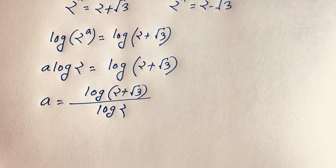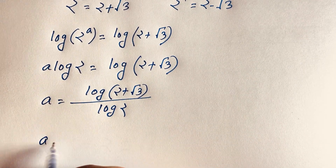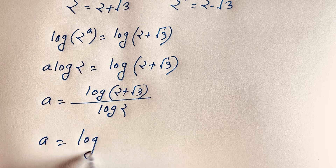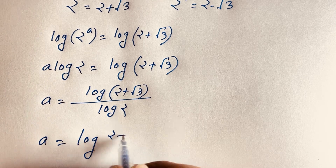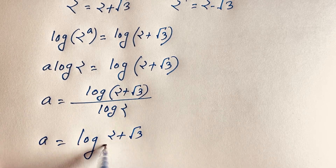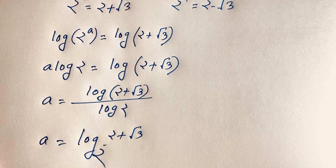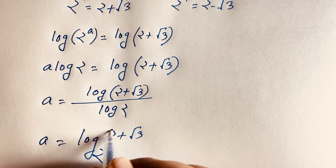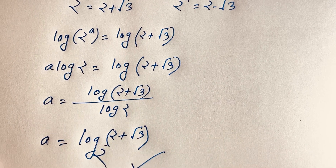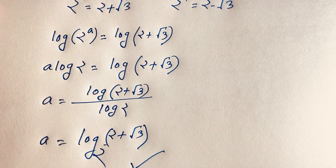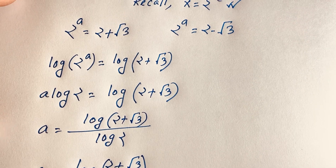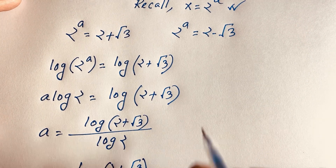This can be written as a = log base 2 of (2 + √3). That is our first value of a.